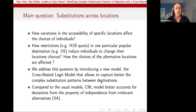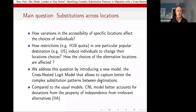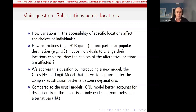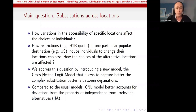This is basically the question we address: how does variation in the accessibility of specific locations affect the choice of locations for individuals? We address this substitution question by introducing a new model called the Cross-Nested Logit (CNL). The main value added of this model is that it allows better capture of complex substitution patterns between alternative locations, unlike the multivariate logit model, which enforces the property of Independence from Irrelevant Alternatives (IIA).